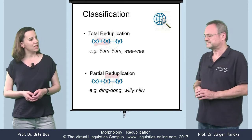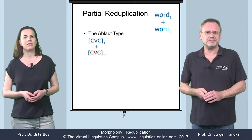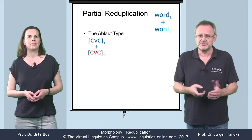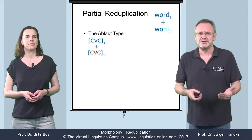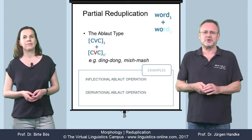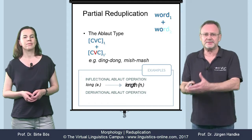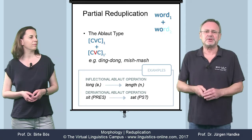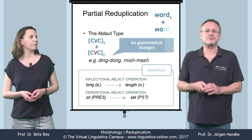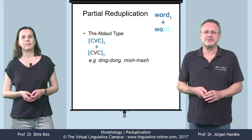There are two types of partial reduplication. The ablaut type of reduplication changes the stressed vowel of the base while the rest of the word is repeated, as in ding-dong or mish-mash. In contrast to inflectional or derivational ablaut operations such as long-and-length or sit-and-set, the ablaut type of reduplication does not involve any grammatical changes in present-day English.